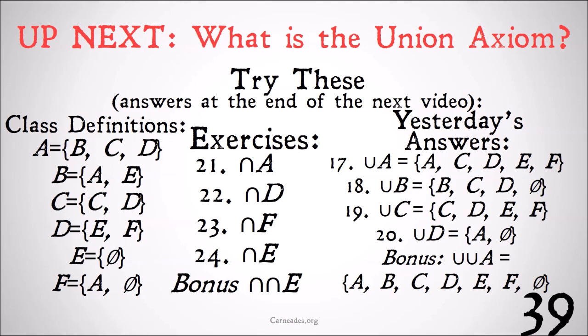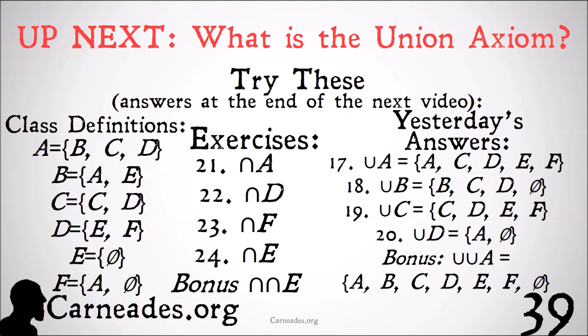For the union of C, we have all the members of C, which is C and D, and all the members of D, which is E and F. For the union of D, we have all the members of E, which is the null set, and all the members of F, which is A and the null set — so the union of D is {A, ∅}. For the bonus, the union of the union of A: we look at what we got for the union of A, which was {A, C, D, E, F}. Taking the members of each, we get A, B, C, D, E, F, and the null set — this big lovely class of {A, B, C, D, E, F, ∅}. Watch this video and more here at Carnades.org, stay tuned for a brand new video every single day this month, and stay skeptical everybody.